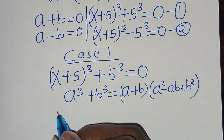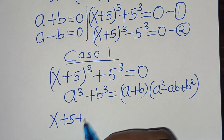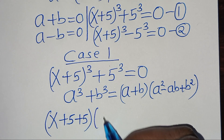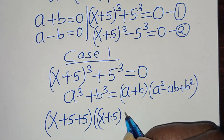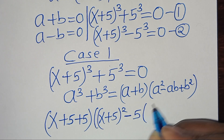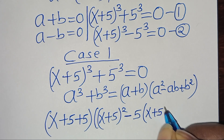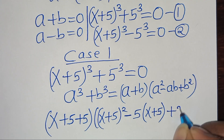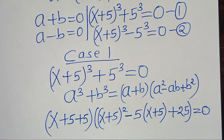We have x plus 5 plus 5, then x plus 5 raised to the power of 2, minus 5 multiplying by x plus 5, then plus 5 squared, which is 25, equal to 0.